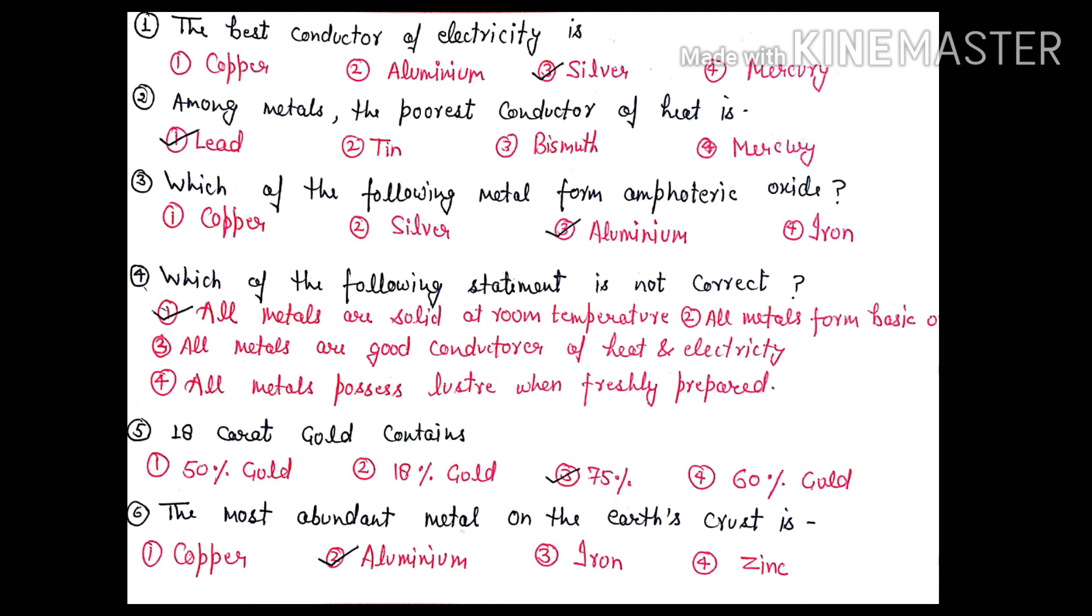Question 4: Which of the following statement is not correct? The first option, all metals are solid at room temperature, is not correct because some metals are not solid. Question 5: 18 carat gold contains - option 3 is right - 75% gold and 25% copper mixture.